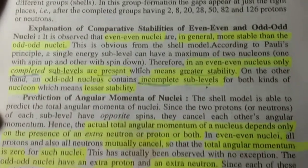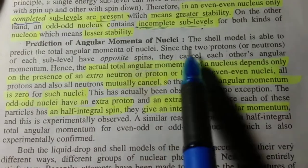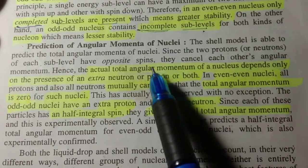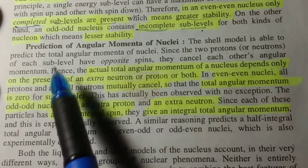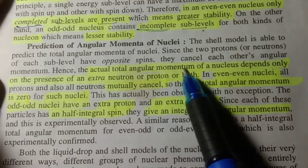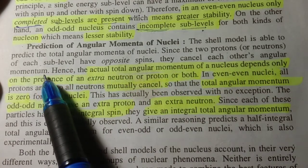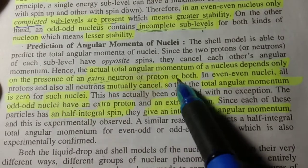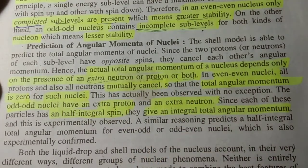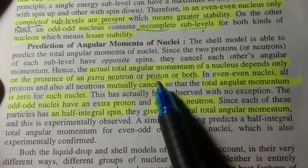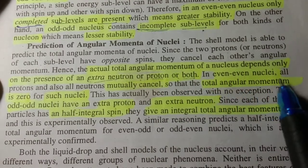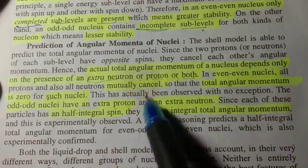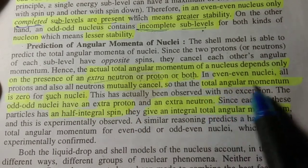Now, the prediction of angular momentum of nuclei. The shell model is able to predict the total angular momentum of nuclei. Since the two protons or neutrons of each sub-level have opposite spins, they cancel each other's angular momentum. Hence, the actual total angular momentum of a nucleus depends only on the presence of an extra neutron or proton or both. In even-even nuclei, all protons and all neutrons mutually cancel, so the total angular momentum is zero for such nuclei. This has actually been observed with no exception.